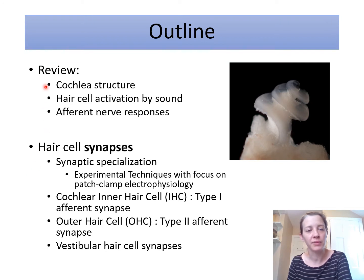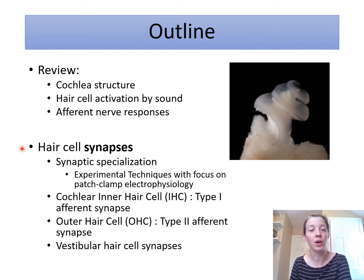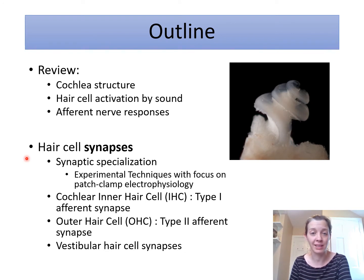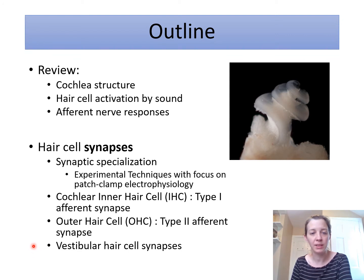An outline of what I'll be going over today: First, I will review the basics of cochlear structure and the mechanical properties of the cochlea. I'm going to go through how hair cells are activated by sound and their electrical responses, and then look at some of the efferent auditory nerve responses to sound. Then we're going to look into the details of how hair cell responses are translated into auditory nerve activity, specifically looking at specializations at the hair cell and afferent synapses. We'll cover the cochlear inner hair cell to type 1 afferent spiral ganglion neuron synapse, the outer hair cell to type 2 afferent synapse, and then finally vestibular hair cell synapses.